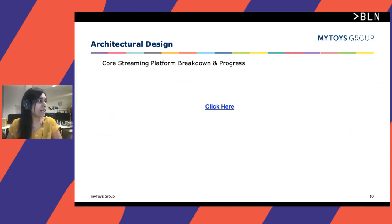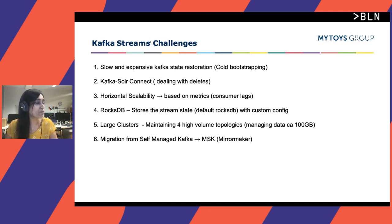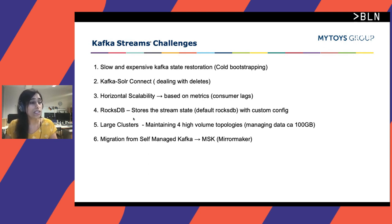We did face some challenges on Kafka Streams. First and foremost was slow and expensive Kafka state restoration, given a data magnitude of almost 100 GB — we used cold bootstrapping to address this. We had to make many customizations to the Kafka Solr Connect because we ran into a race condition with document additions and deletions, requiring us to modify its behavior. For horizontal scalability, we used consumer lag metrics: if consumer lag exceeded a threshold, we spun up a new pod in Kubernetes. We also migrated from self-managed Kafka to MSK, using Mirror Maker for the transition.